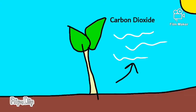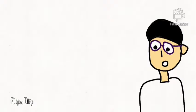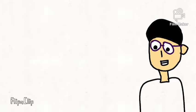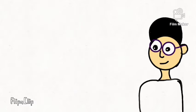The mode of nutrition in which organisms synthesize their own food using inorganic materials such as carbon dioxide, water, and minerals is called autotrophic nutrition. Organisms that exhibit this kind of nutrition are called autotrophs. Some examples are green plants and certain bacteria.